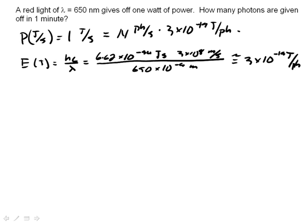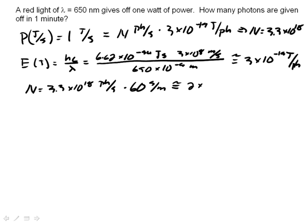And I come up with n equal 3.3 times 10 to the 18th photons per second. And then if I take n equal 3.3 times 10 to the 18th photons per second times 60 seconds per minute, let's go ahead and plug this in on my calculator. Multiply by 60. And I get essentially 2 times 10 to the 20th photons per minute.